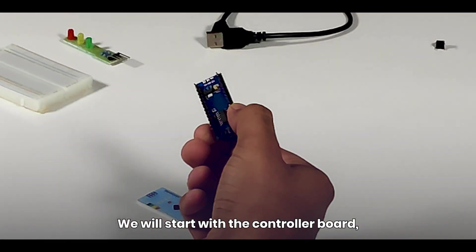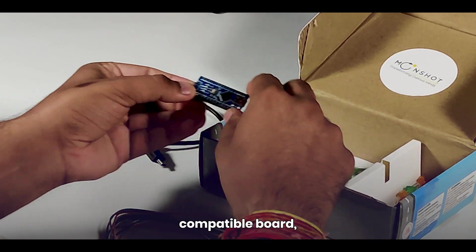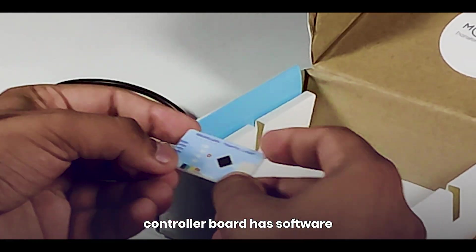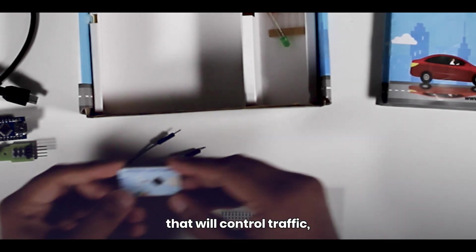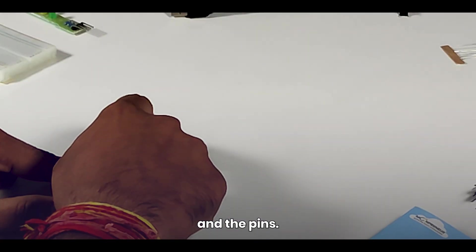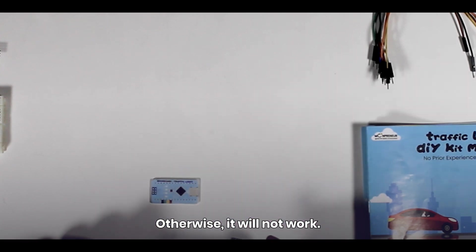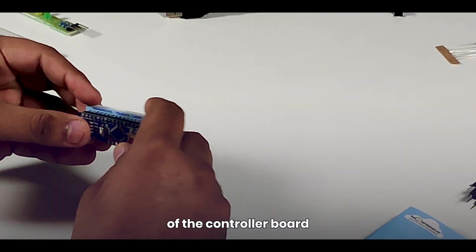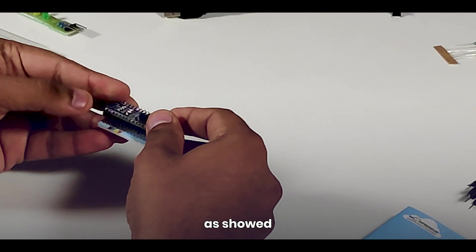We will start with the controller board, which is an Arduino nano-compatible board, and the Moon card controller board has software that will control traffic. Match the drawing in the Moon card aligning the connectors and the pins, otherwise it will not work. Insert the combination of the controller board and Moon cards in the breadboard as showed.